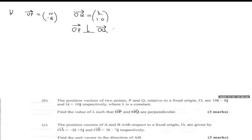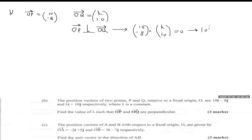Since vector OP is perpendicular to vector OQ, that implies their dot product equals zero. Whenever two vectors are perpendicular, their dot product is equal to zero. So (10, -8) dot (λ, 10) equals zero. This gives us 10 times λ plus minus 8 times 10, so 10λ minus 80 equals zero.